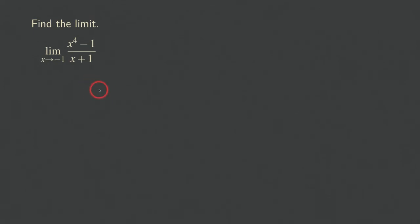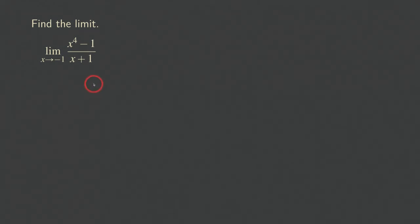Hello everyone, let's look at this problem. We have this rational function x to the fourth minus one, all over x plus one. For this function, we are trying to find the limit as x is approaching negative one.